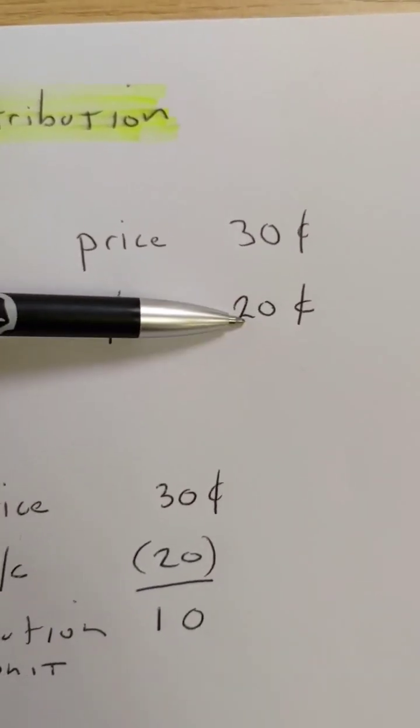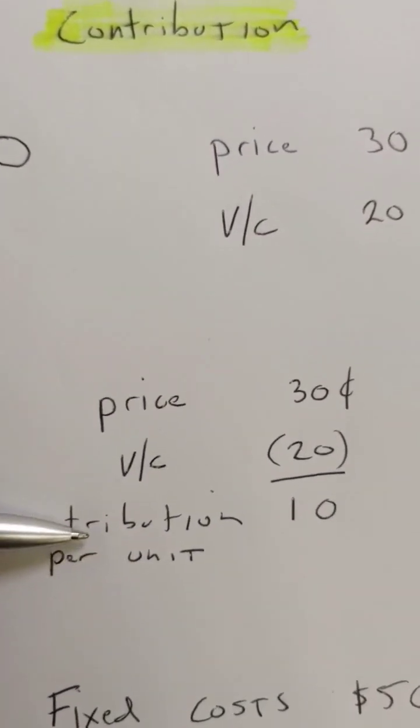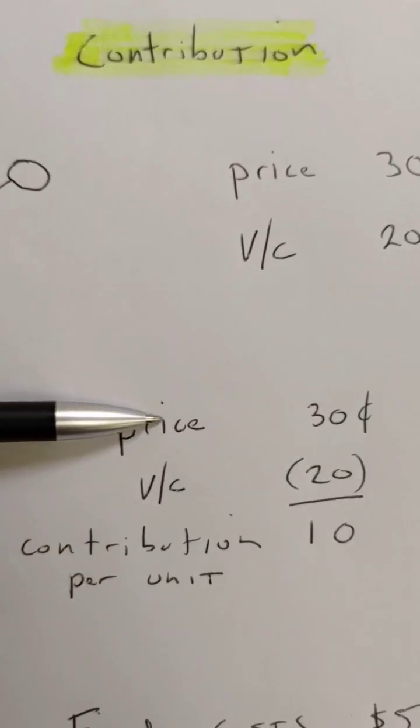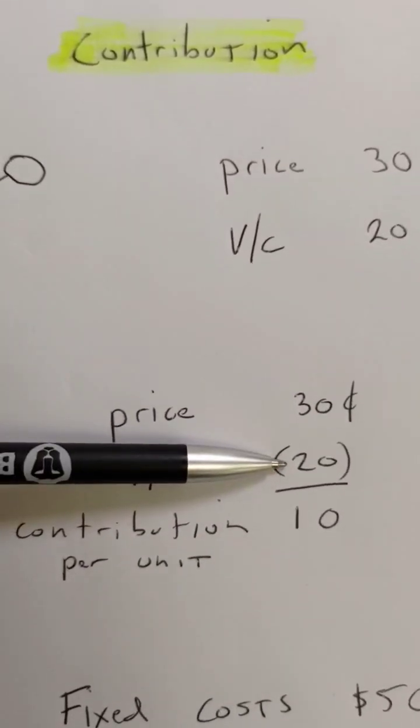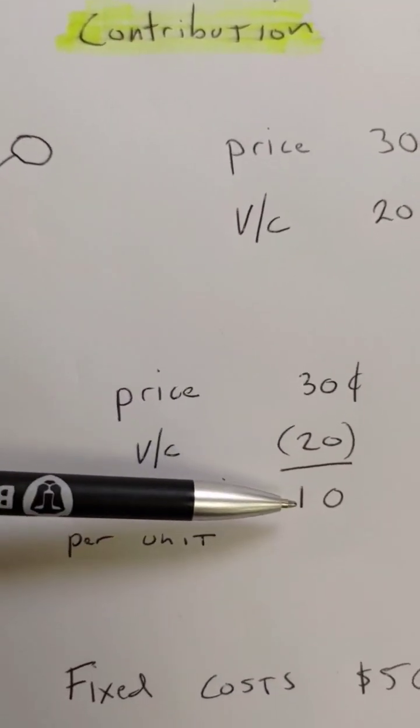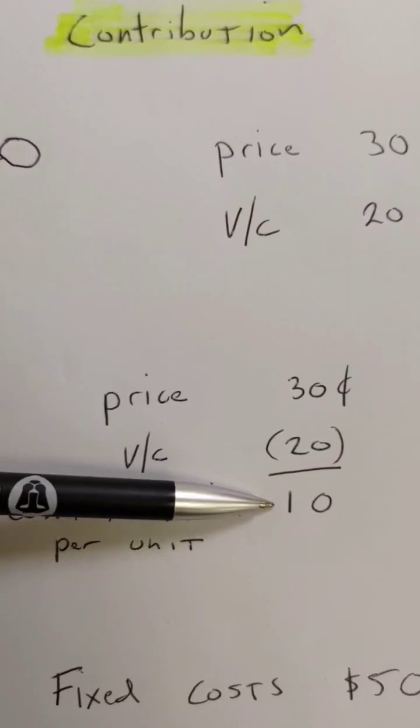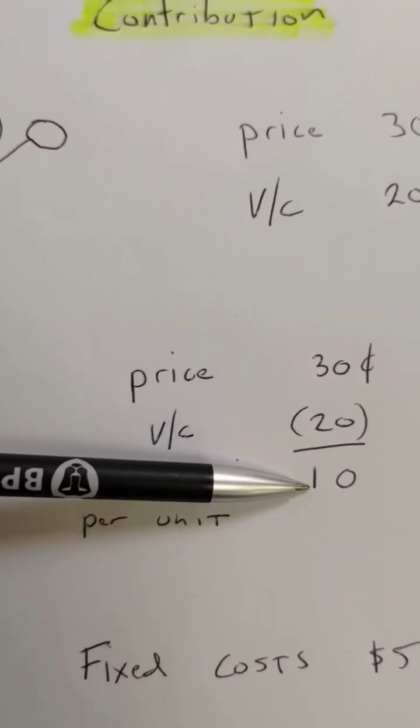butter, direct labor, etc. Contribution per unit - well, I sell for 30 cents, variable costs (production and non-production) are 20 cents per unit, so what's left over is 10 cents. After I cover my variable cost, 10 cents contributes to